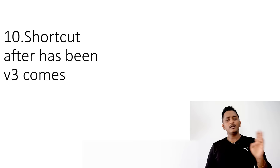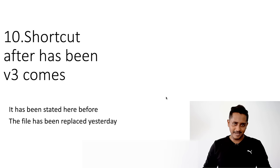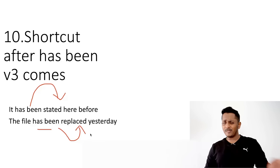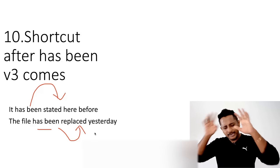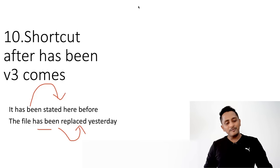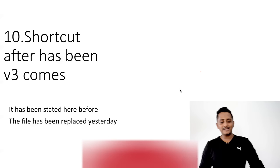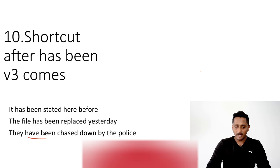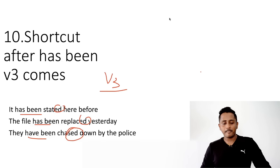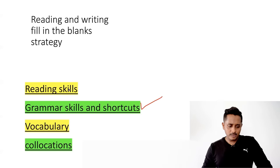Shortcut number ten: after 'has been,' 'have been,' or 'had been,' verb three comes. 'It has been stated,' 'it has been called,' 'it has been killed,' 'the file has been replaced.' Verb -ing can also come: 'he has been waiting.' Write these down and identify them whenever you practice. Observation is very important.